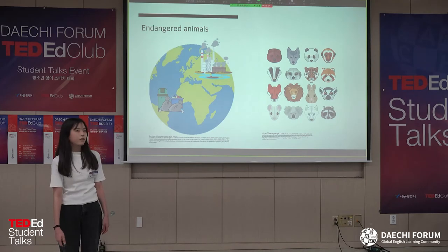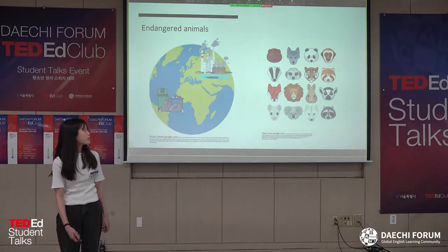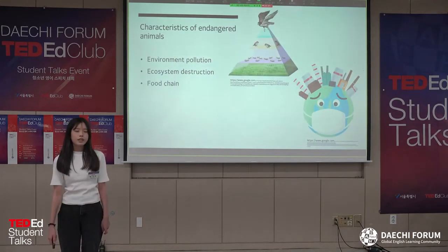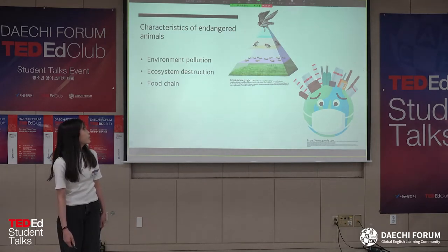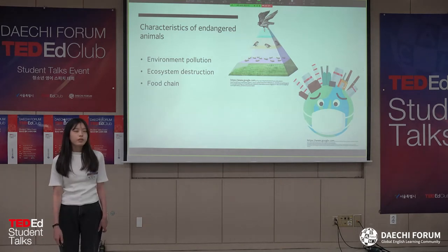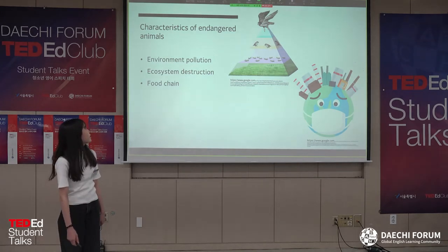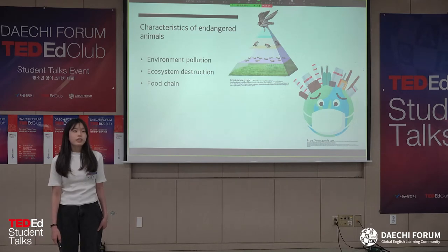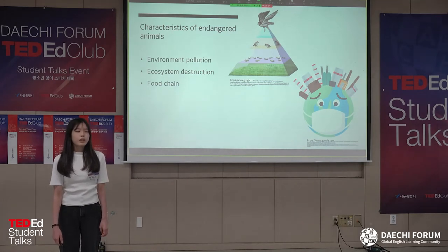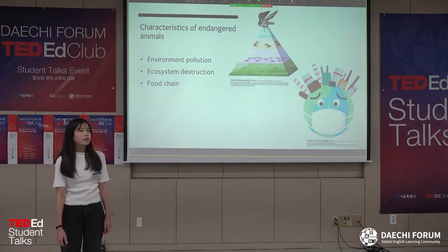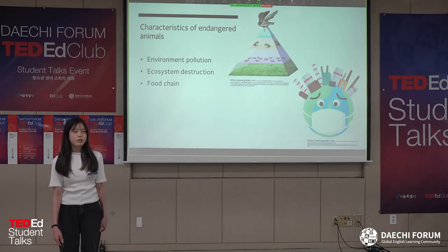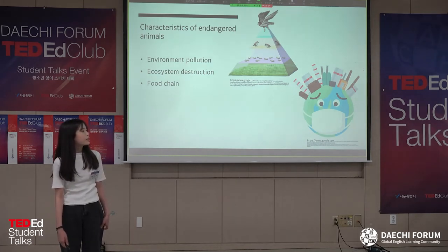Then what is the characteristic of endangered animals and what can we do to help the animals? First, the characteristics of endangered animals: they are increasing because of environmental pollution, also because of ecosystem destruction and they couldn't adapt to nature. Ecosystem means that each animal and the natural environment are related in nature.